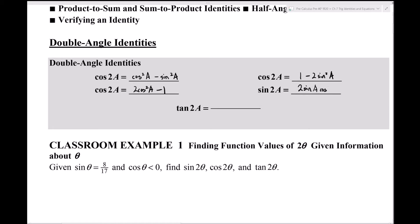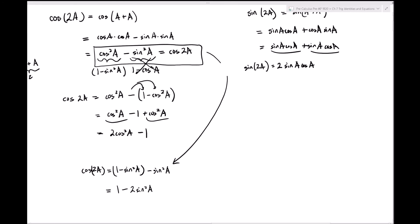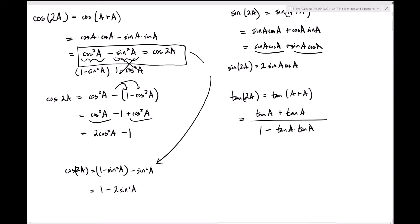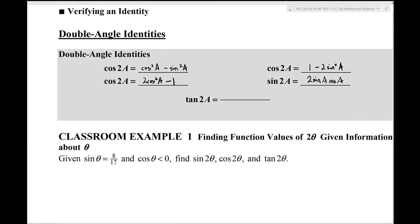For tan(2a), write it as tan(a+a) and apply the tangent sum formula: (tan(a) + tan(a)) / (1 - tan(a)·tan(a)). The numerator simplifies to 2tan(a) and the denominator to 1 - tan²(a), giving the formula tan(2a) = 2tan(a) / (1 - tan²(a)).